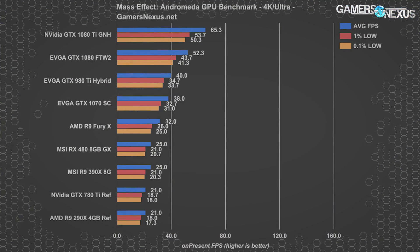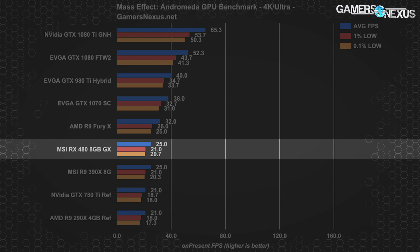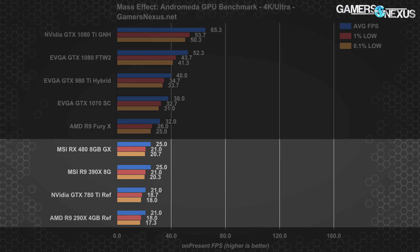One note: there's really not much of a performance benefit by going to high settings in our test course, so it's really ultra, medium, or bust at 4K. The MSI RX 480 Gaming X 8GB hands on pretty closely to the Fury X at 25 FPS average, tying the 390X and outpacing both the former flagships from AMD and NVIDIA — the 290X and the 780 Ti.